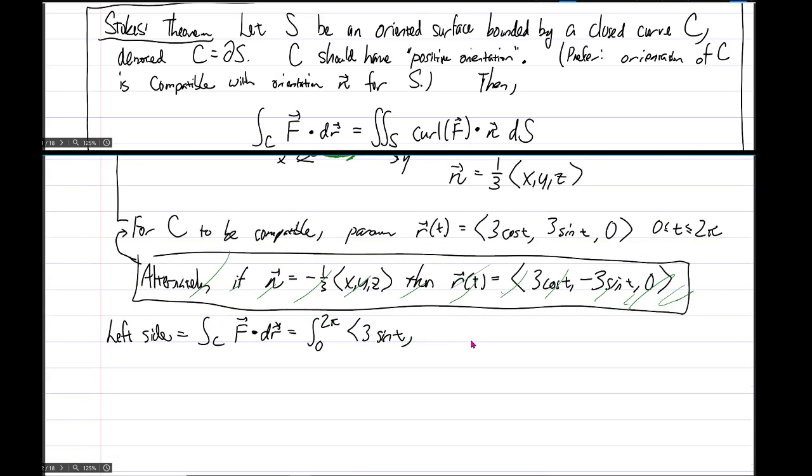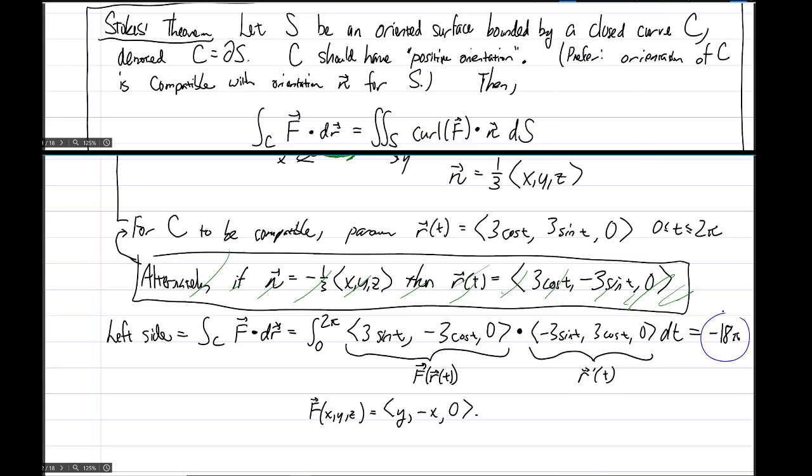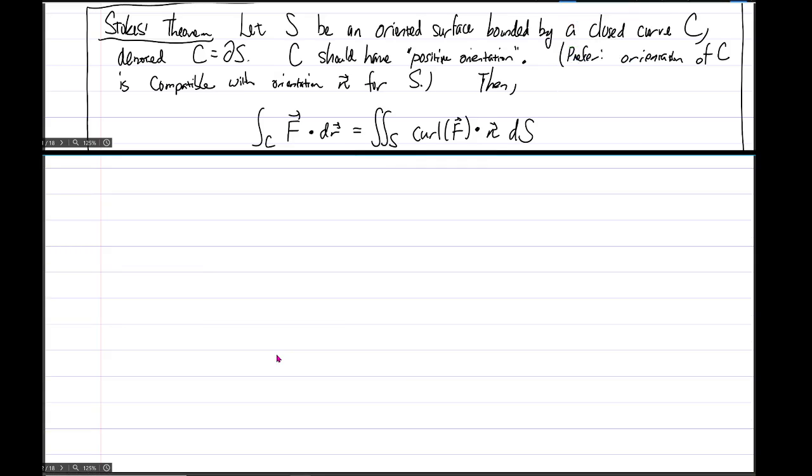So the y, so we need F of r of t, so y gets replaced with 3 sine t, then we have negative x, so we have negative 3 cosine t, and then we have 0. So this, well, let's not erase that. So right here, what we have is this is F of r of t, and then we need to dot that with r prime of t, so let's stare at this and then take a derivative. So we'll have angle bracket negative 3 sine t, 3 cosine t, 0, dt. So this part right there, this is r prime of t, and we will not go through all the computation here. You ought to just go through it. It's not too much work, and in the end, you will get for this negative 18 pi. And then we'll come back to this number, negative 18 pi, in just a moment.